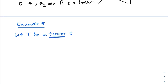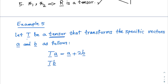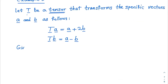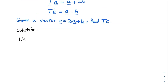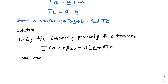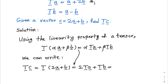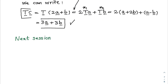Let T be a tensor that transforms specific vectors A and B in a given way. Given a vector C equal to 2A plus B, find T of C. Using the single linearity property of a tensor, we can write T of C equals T of (2A plus B) equals 2 times T of A plus T of B.